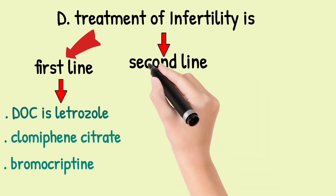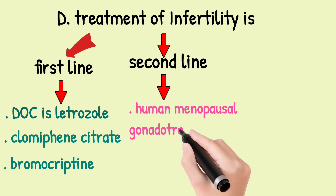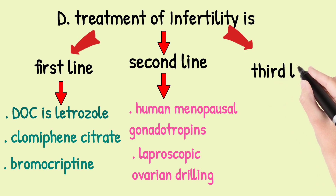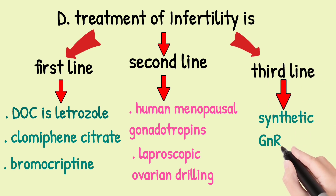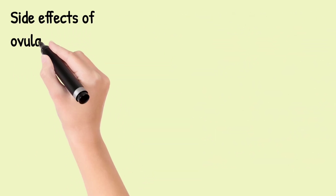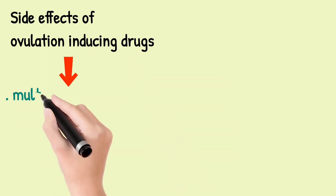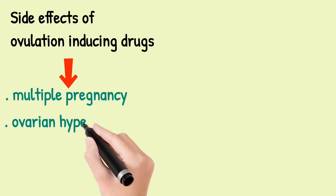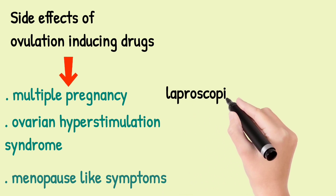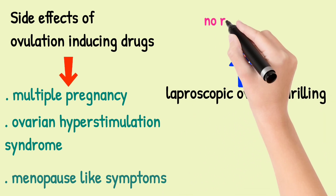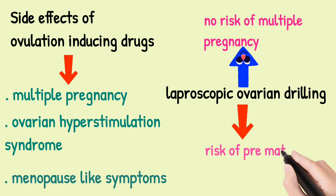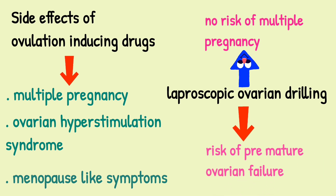Second-line treatment: we give human menopausal gonadotropins, and laparoscopic ovarian drilling is also done. Third-line treatment: synthetic gonadotropin-releasing hormone given in a pulsatile manner. Side effects of ovulation induction are multiple pregnancies — most common — and ovarian hyperstimulation syndrome, and menopause-like symptoms. With laparoscopic drilling, there is no risk of multiple pregnancies, but there is a risk of premature ovarian failure.